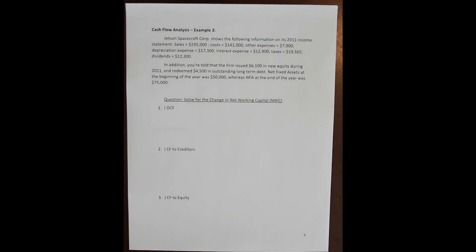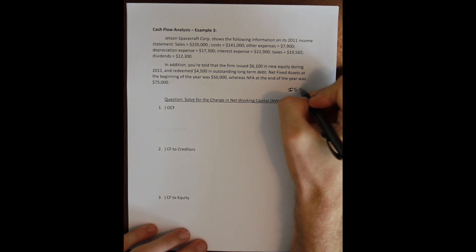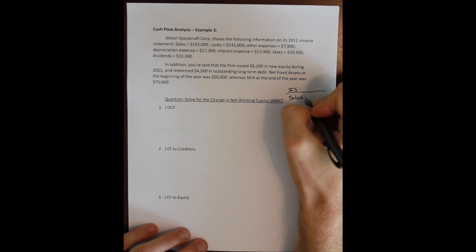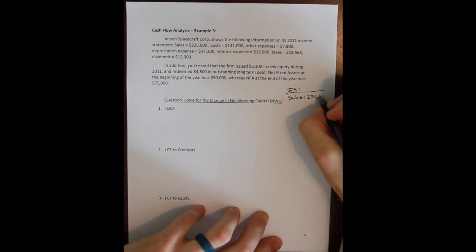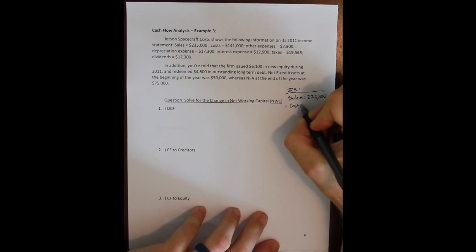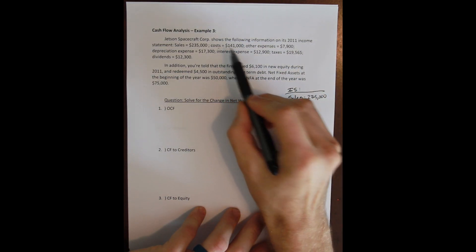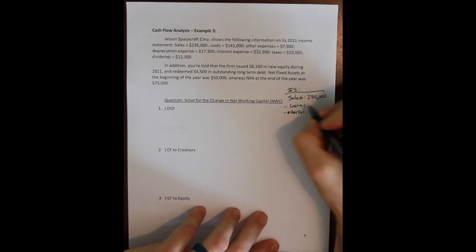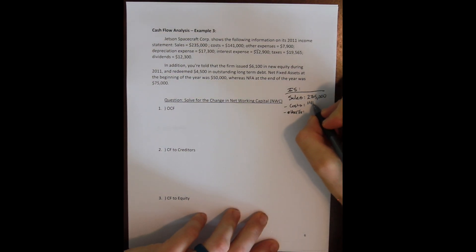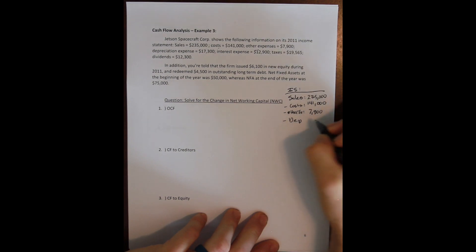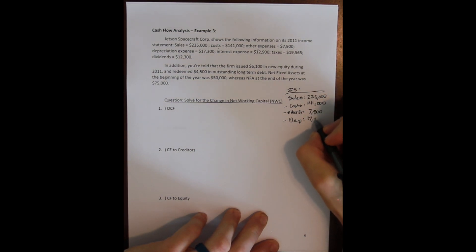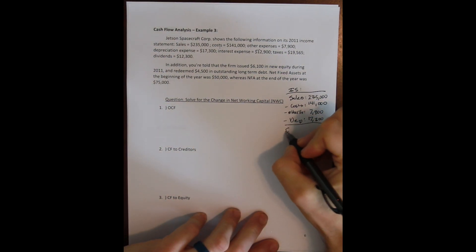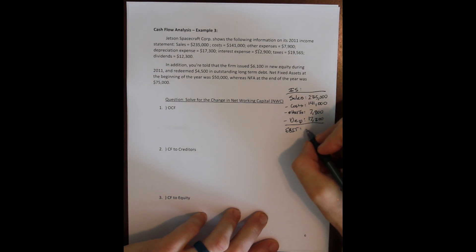We build a simple income statement. Sales at the top: $235,000. Then we subtract costs — we have two cost line items: costs of $141,000 and other expenses of $7,900, both general costs the firm is incurring. Then we subtract depreciation expense of $17,300. That gives us EBIT, which if we do our algebra correctly is $68,800.